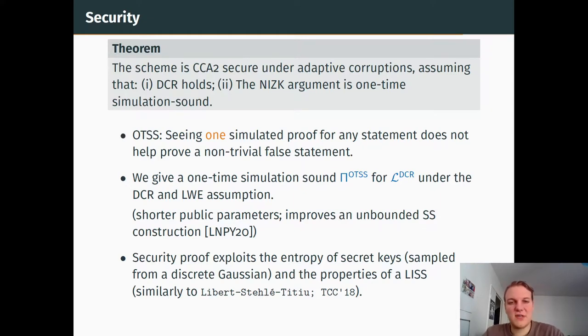One-time simulation sound means that if an adversary sees one simulated proof for any statement of its choice, it does not help the adversary to forge a proof for a non-trivial false statement. As I've said, we give such argument system under the DCR and learning with errors assumptions. It's actually an improvement of an unbounded simulation sound construction which was already existing. But we get shorter public parameters because instead of unbounded simulation soundness, we only need one-time simulation soundness.